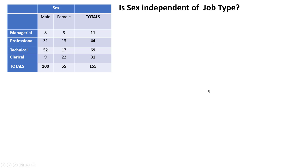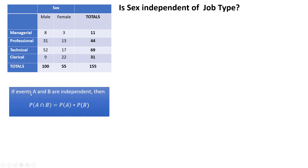What if I'm asked: is sex independent of job type? I want to know if there's independence between sex and job type. If you watched the last video on intersections and independence, you know this formula: if events A and B are independent, then the probability of A and B equals the probability of A times the probability of B. The probability of A and B — the intersection — comes from those cells in the table.